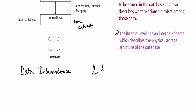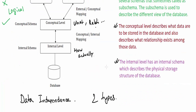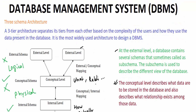There are two types of data independence. The first is logical data independence, which is the capacity to change the conceptual schema without changing the external schema — a change in conceptual won't affect external. Similarly, physical data independence is the capacity to change the internal schema without changing the conceptual schema.